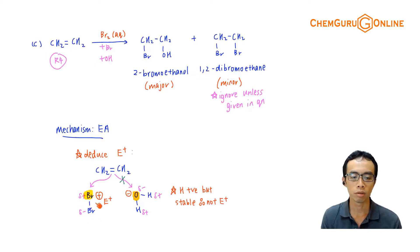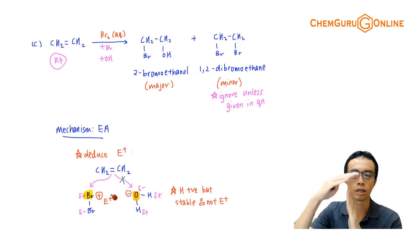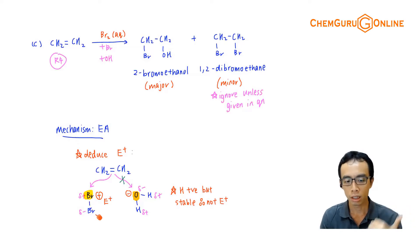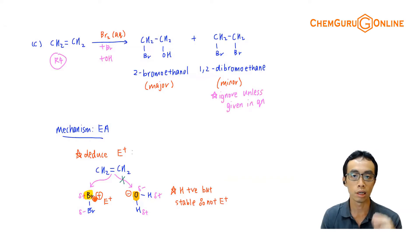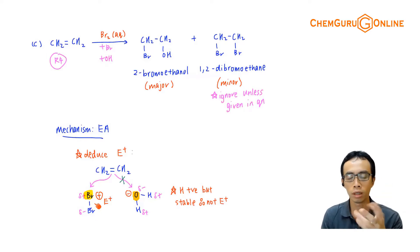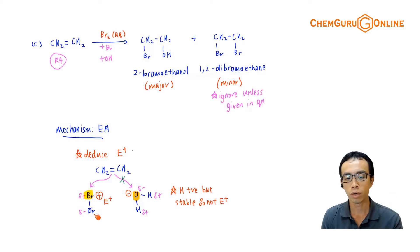Bromine - remember, last week we talked about it - when Br2, which is essentially non-polar, doesn't function as the electrophile on its own. But when it approaches the alkene perpendicular to the alkene, the bromine which is closer has its electron cloud pushed away, so this bromine which is closer will be delta plus, and the other bromine will be delta minus.